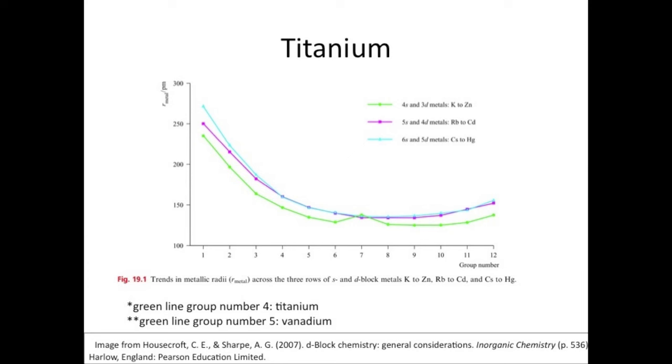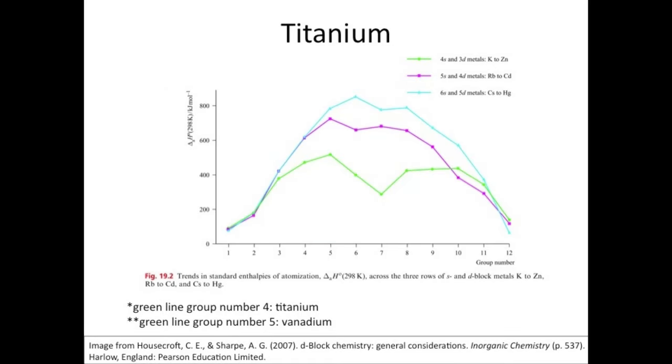Based on the graph, titanium has a higher atomic radius compared to vanadium. As the number of electrons increases, the number of protons also increases, thus, the atomic radius decreases. The enthalpy of atomization of vanadium is greater than titanium because vanadium has a stronger metal-metal bonding than titanium.